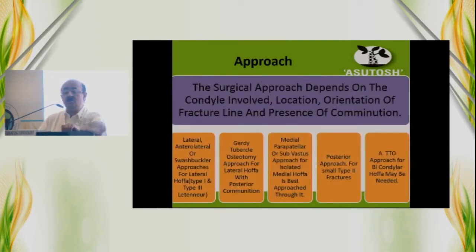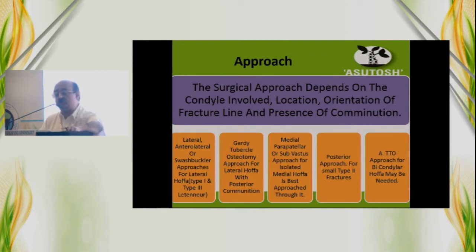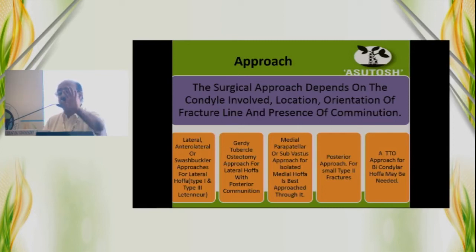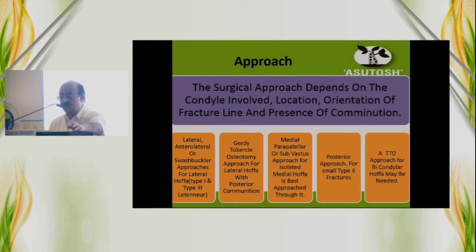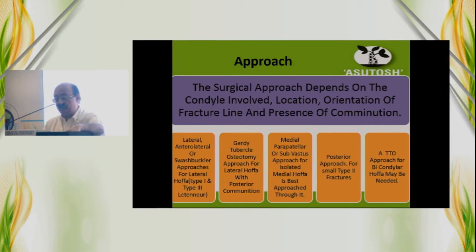The most controversial part of a Hoffa fracture is its approach. The decision-making should involve the condyle involved, the location, the orientation, and the amount of comminution. For a lateral Hoffa, a lateral or anterolateral approach — or a swashbuckler approach — is good. For a medial Hoffa, a medial parapatellar approach or a sub-vastus approach can be used.